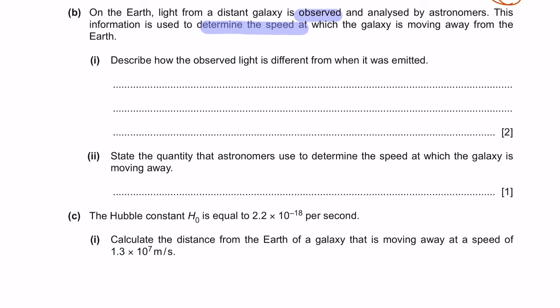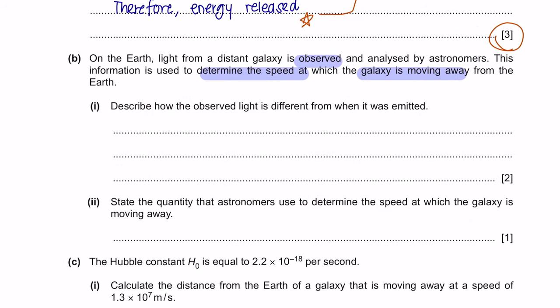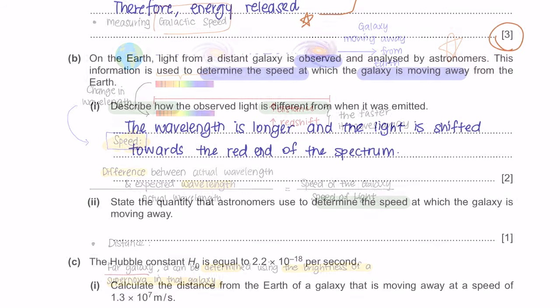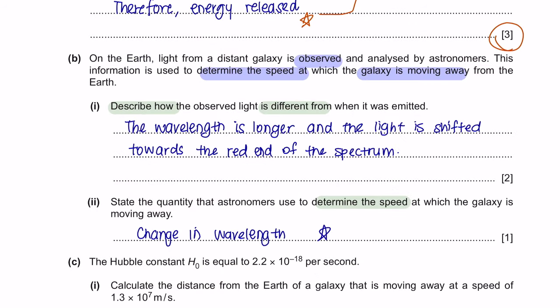This information is used to determine the speed at which a galaxy is moving away from Earth. In Space Physics you will learn about redshift — the increase in the observed wavelength of electromagnetic radiation emitted from receding stars and galaxies, meaning the light is shifted toward the red end of the spectrum. Part 1: the observed light differs in that its wavelength is longer, shifted toward the red end of the spectrum. Part 2: astronomers use the change in wavelength to determine the speed at which the galaxy is moving away.